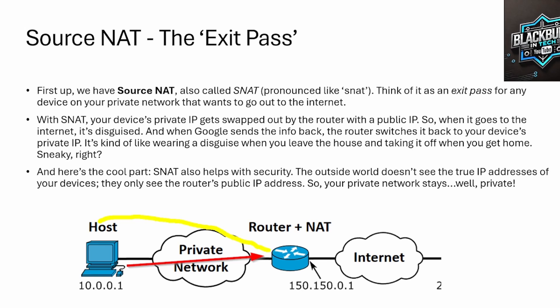My router knows it can't route that on the internet. If it doesn't know it, then that packet's going to get dropped, because by the time it gets to the internet, it's just going to drop it anyway. So it knows if I want to route this out, I need to use my public IP address. So there's one way to do it — you could map just a single device to that public IP address.